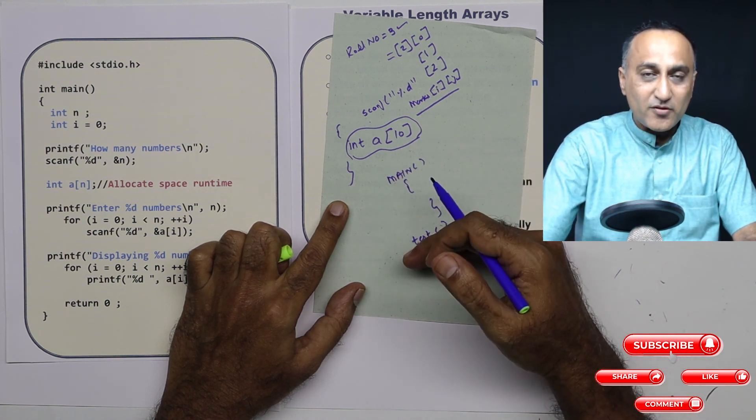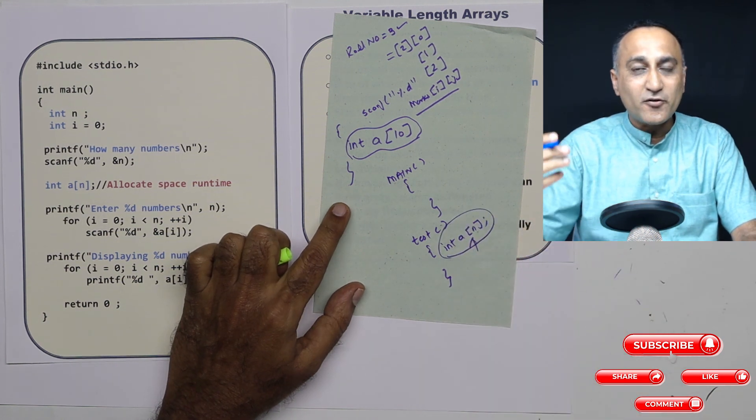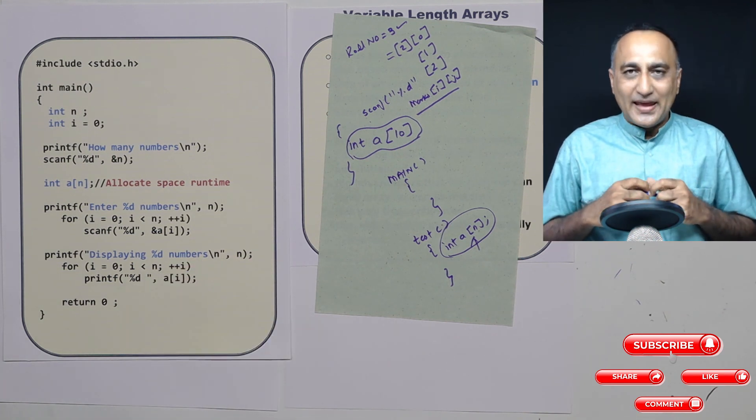So if you have a main and you have a function and you are sure that the size of the array is going to be different every time you run, then it makes some sense to use a variable length array.